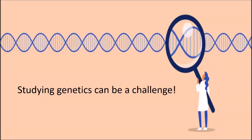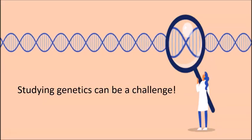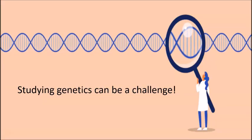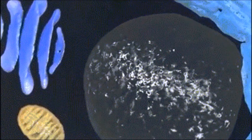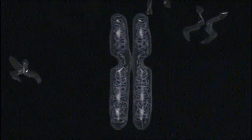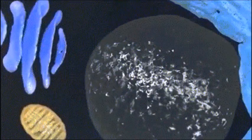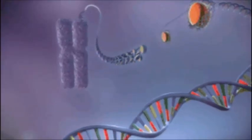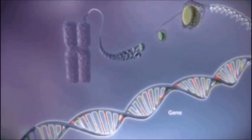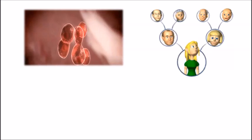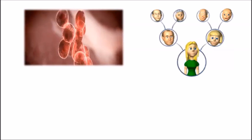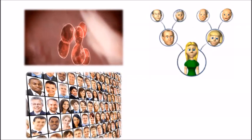Genetics is probably one of the most interesting but often challenging topics in biology. When studying genetics, it is first of all important to have a basic understanding of the relationship between chromosomes, DNA and genes. These are the main characters that we will be focusing on as we go on to look at cell division, inheritance of traits, variation and genetic engineering, which we will all cover in this series.